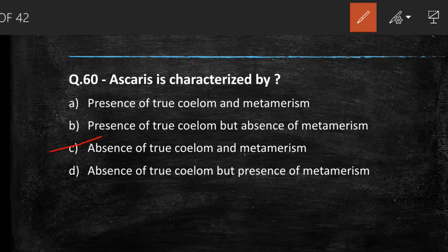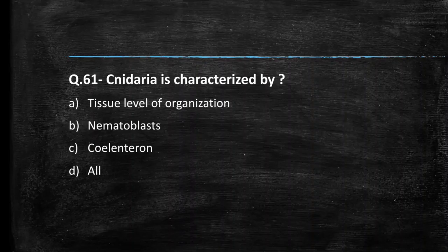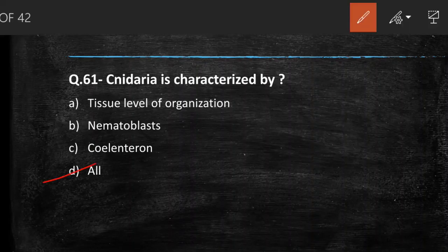Next question: Cnidaria is characterized by — tissue level of organization, nematoblasts, coelenteron. All three qualities are present in Cnidaria. So the answer is option D: all of the above.